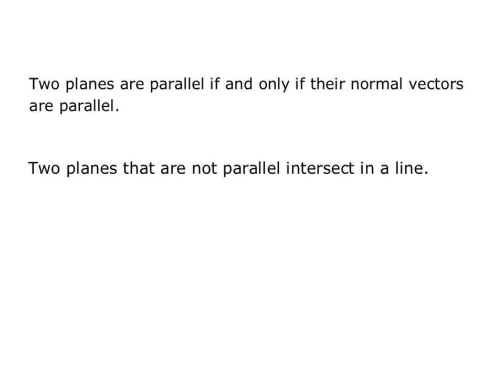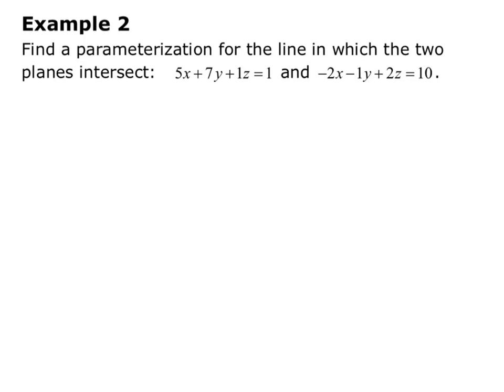So what we will be interested in is finding the equation of the line of intersection. In this example, we want to find a parameterization for the line in which the two planes intersect. We're given the two planes 5x + 7y + z = 1 and -2x - y + 2z = 10.